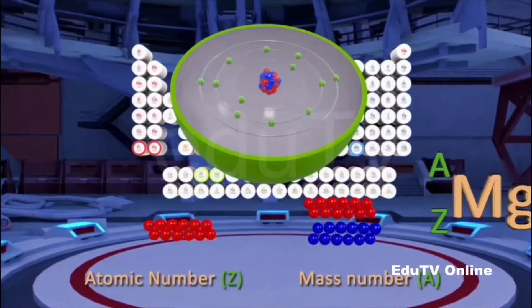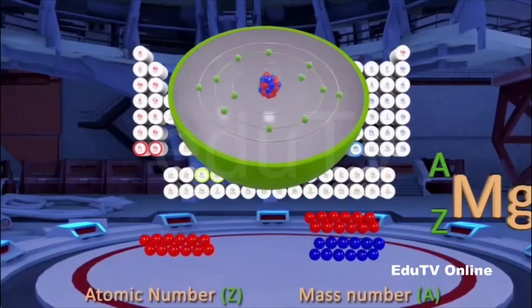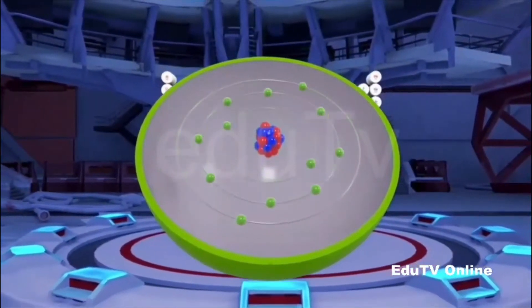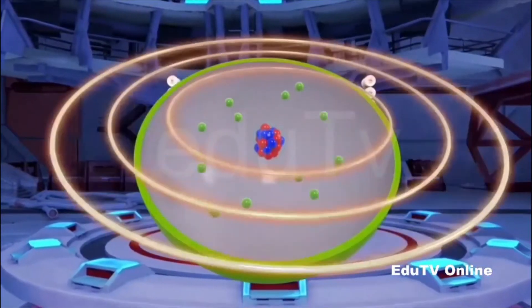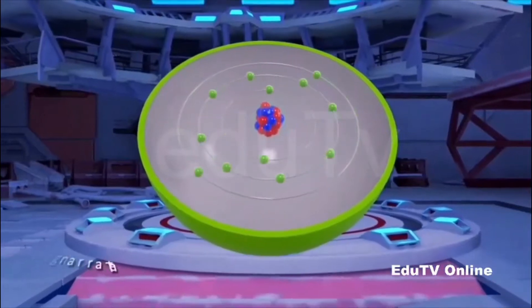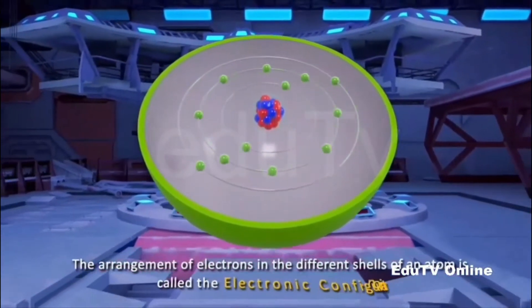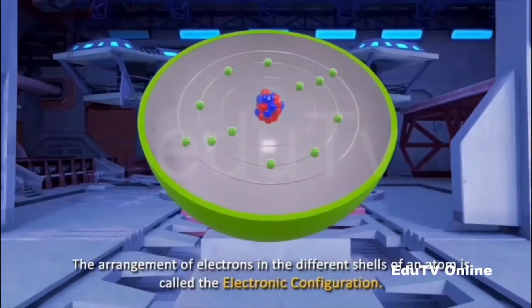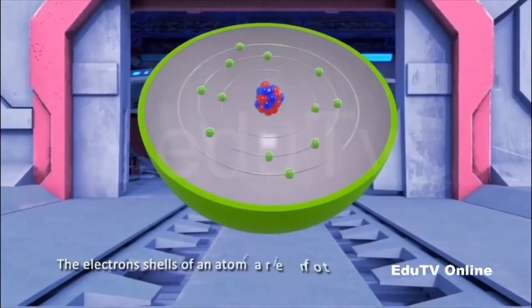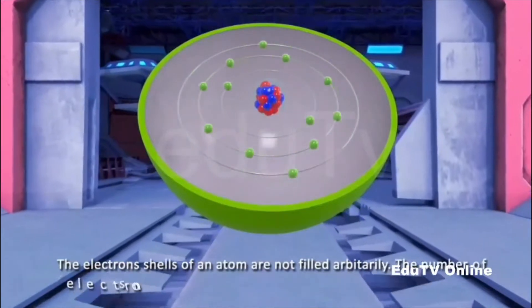Besides protons and neutrons, there are negatively charged particles called electrons, which revolve around the nucleus in various shells or orbits. The representation showing the arrangement of electrons in the different shells of an atom is known as its electronic configuration. The electron shells of an atom are not filled arbitrarily, but in accordance with a set of rules called the Bohr-Bury rules.